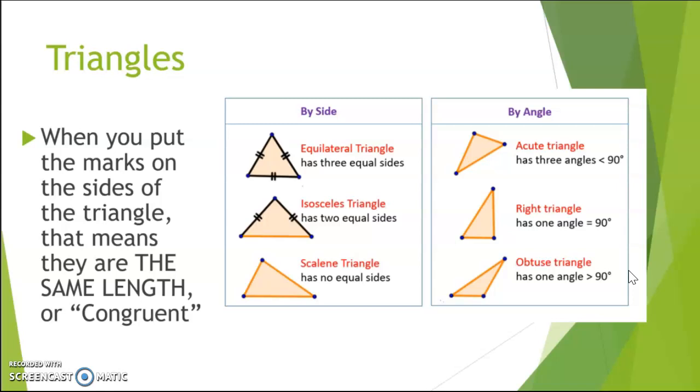We can also name triangles based on their angles. And so an acute triangle has all three angles that are less than 90 degrees, just like acute angles are less than 90 degrees. We have a right triangle where one of the angles inside of that triangle will be a 90 degree angle. And then finally an obtuse triangle where one of the angles inside of that triangle will be greater than 90 degrees.